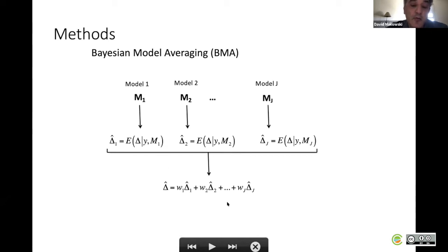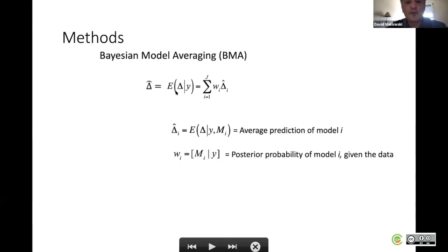Then we compute the weighted average of the 10 predictions. The weighted average can be seen as the posterior mean. That's why it's called Bayesian model averaging. Each individual prediction is dependent on the model and on the data. The weight corresponds to the posterior probability of one model given the data.